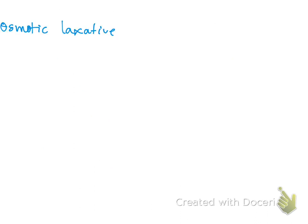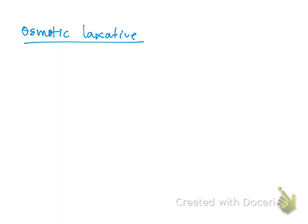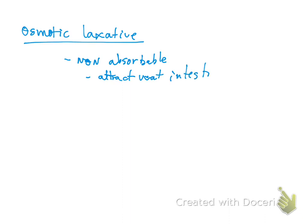Now let's talk a little bit more about osmotic laxatives. I'm going to open the notes here so we can focus better. How do they work? Those osmotic laxatives work because they are non-absorbable. Basically, you cannot absorb the substance. And if you cannot absorb it, you are going to attract water into your intestinal lumen.